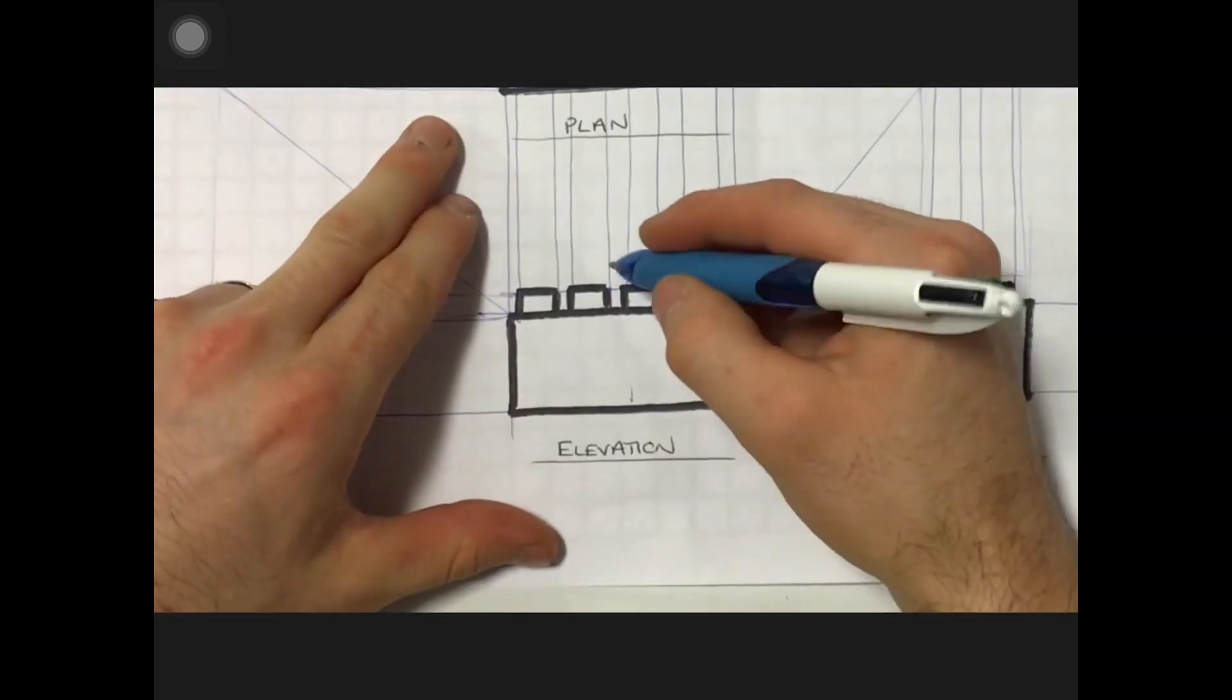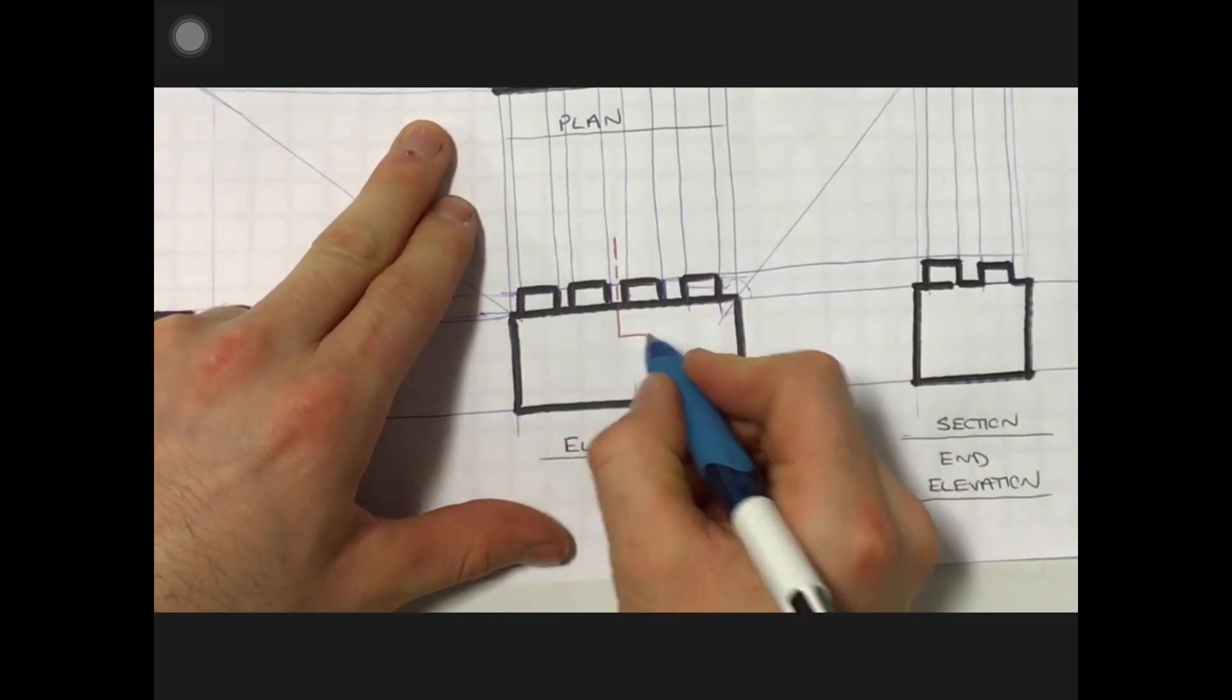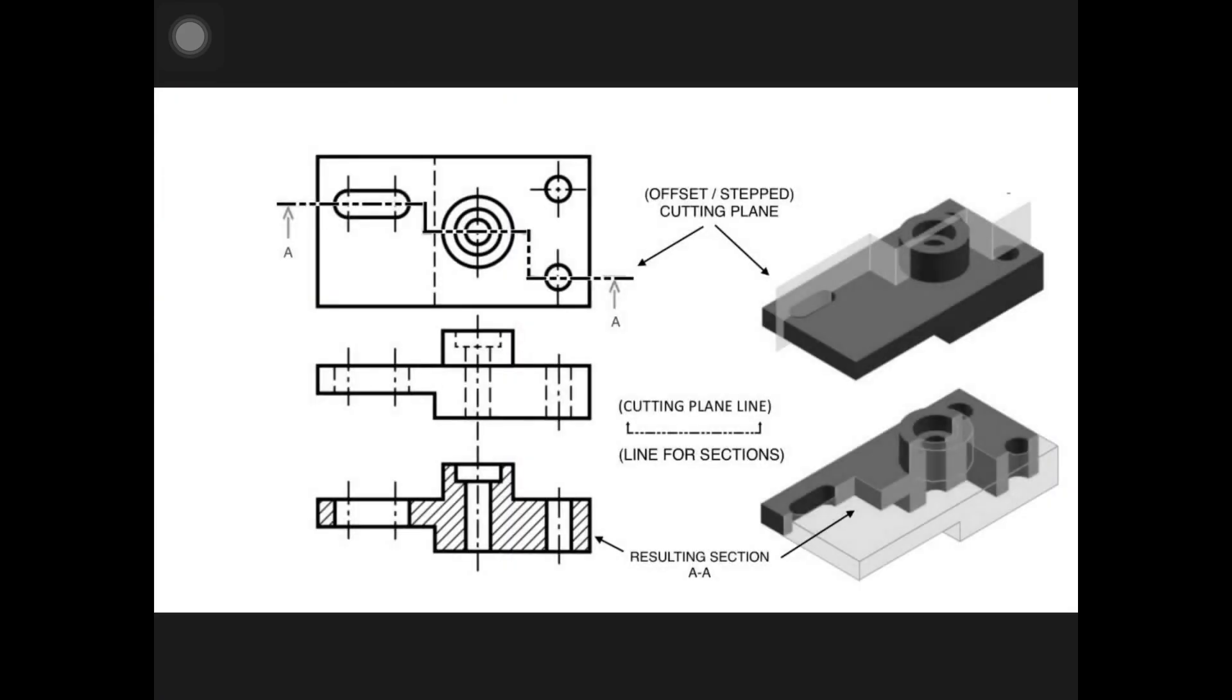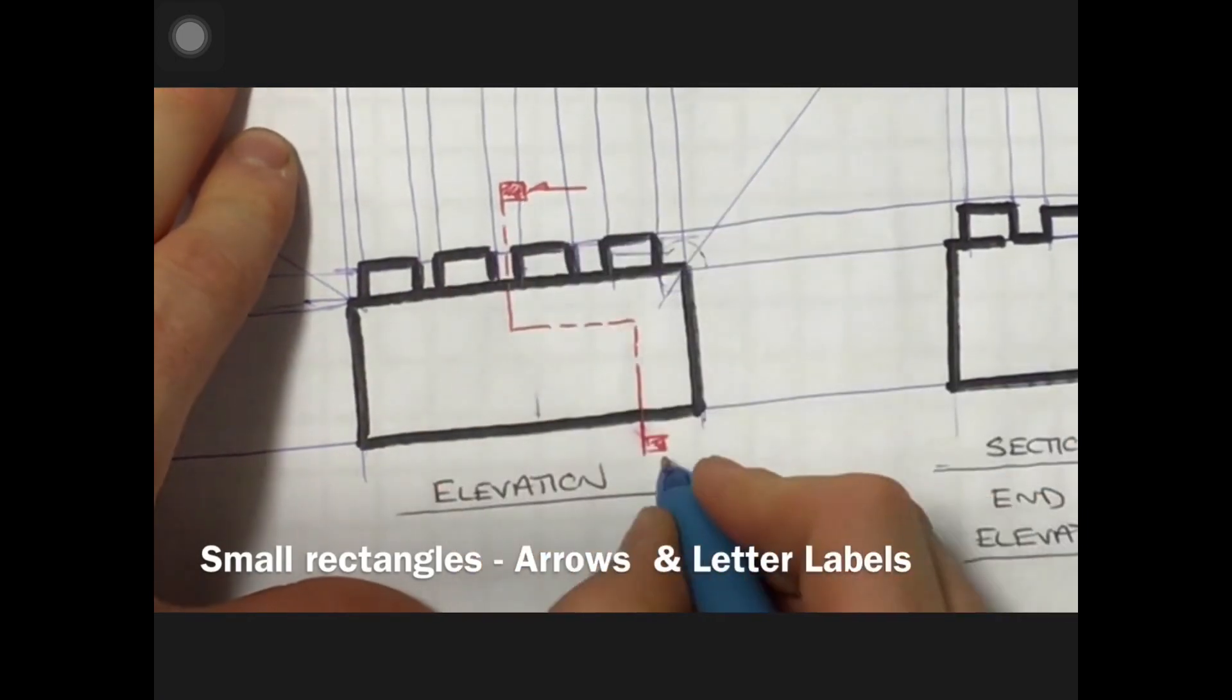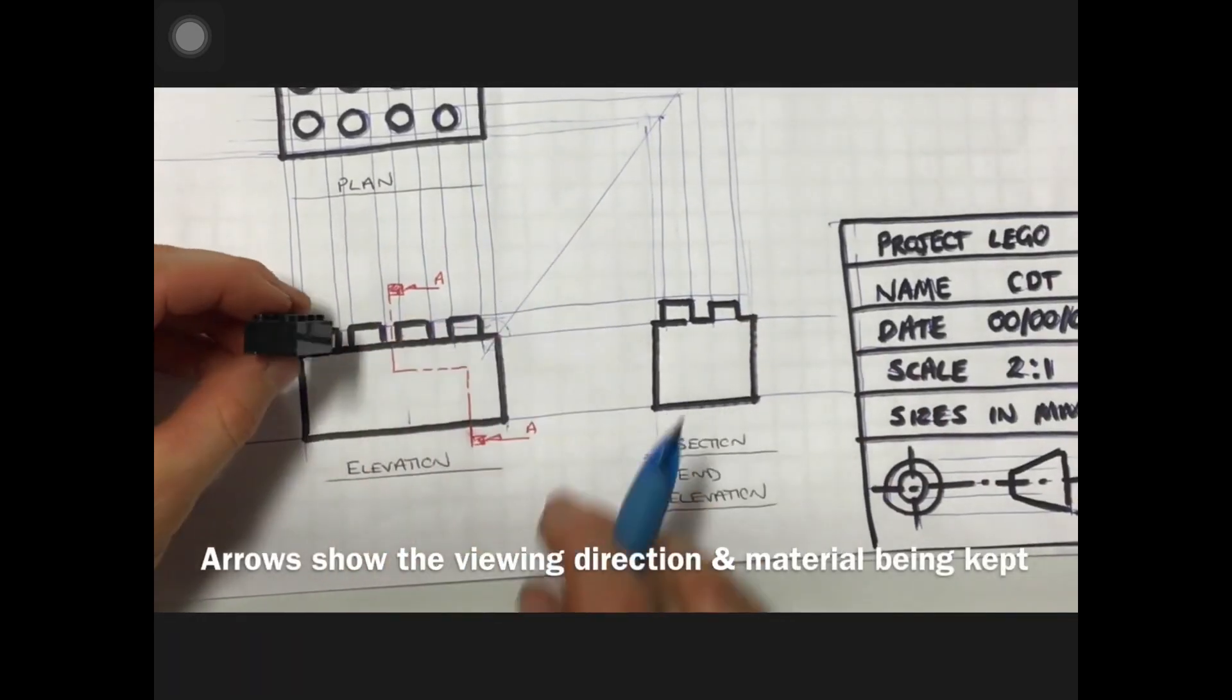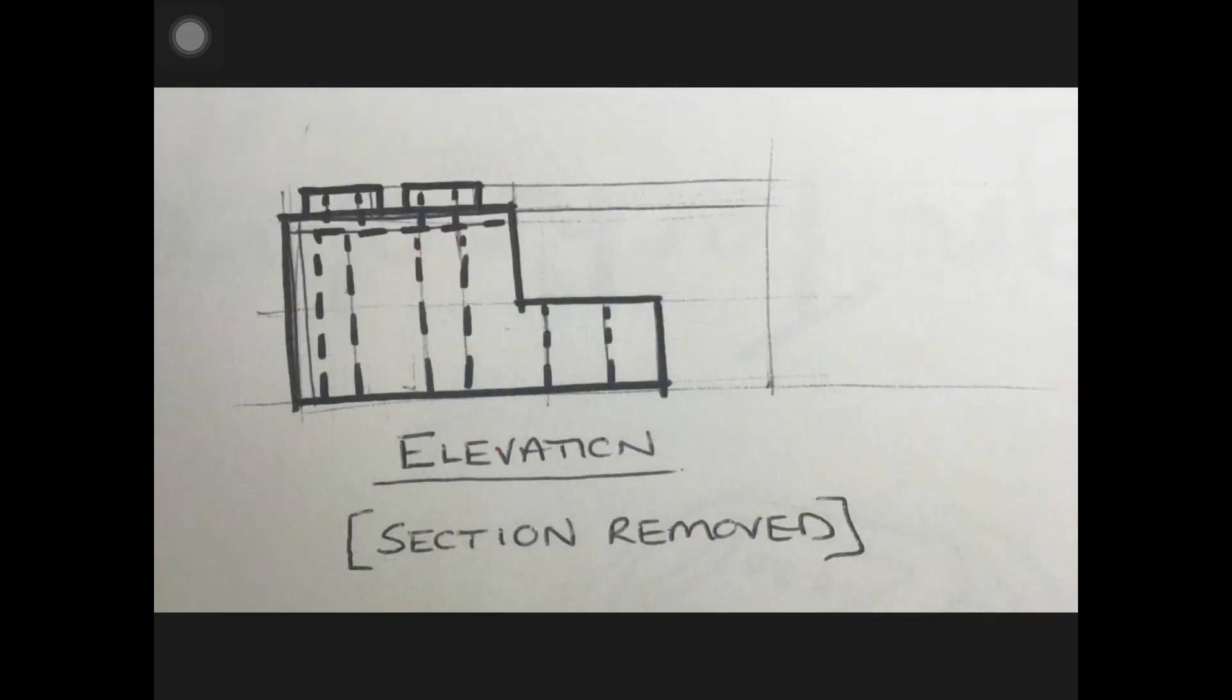What I'm going to do is add in my step section line. Remember it would be a long and short short and a long, then short short and long. My small boxes, little arrows indicating the direction of view A and A. You really need to think about now - it doesn't go straight, it goes down, along, and down again, and you really need to look at your object to work out what that's actually going to look like as it's being cut through.